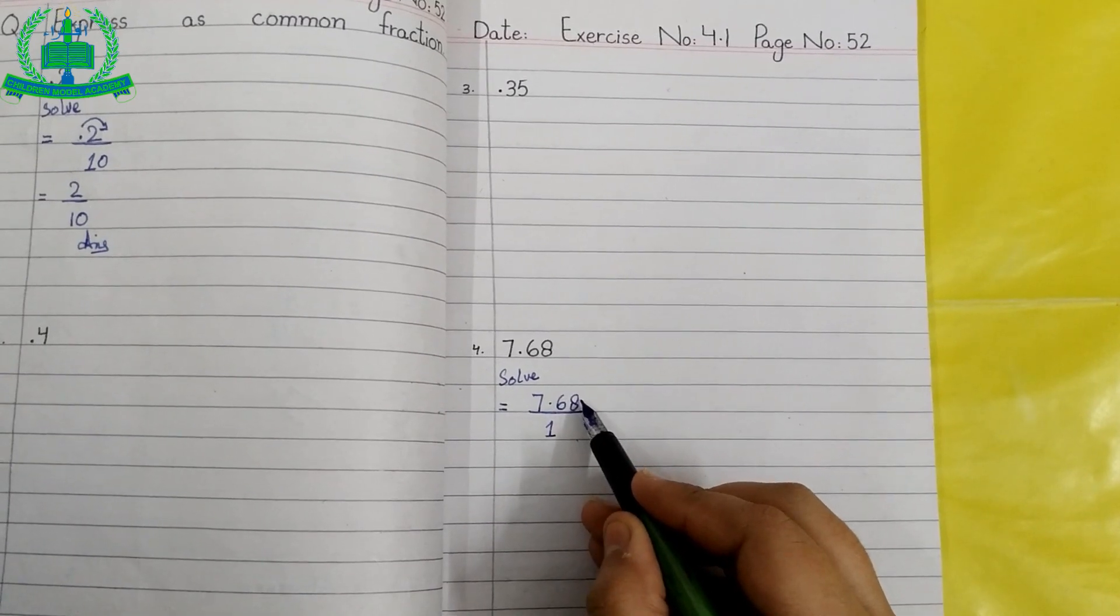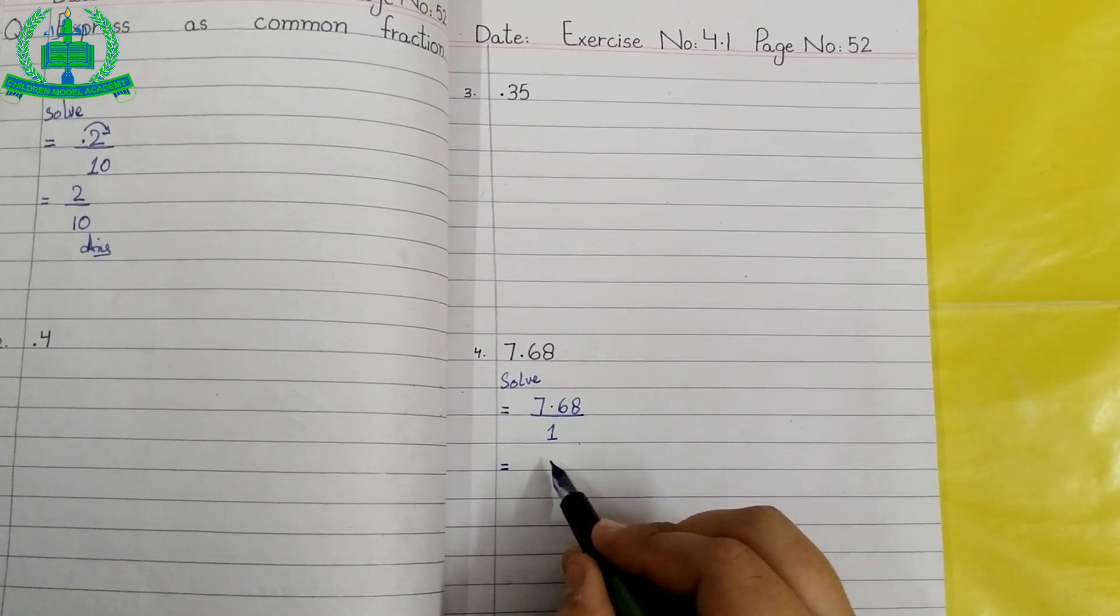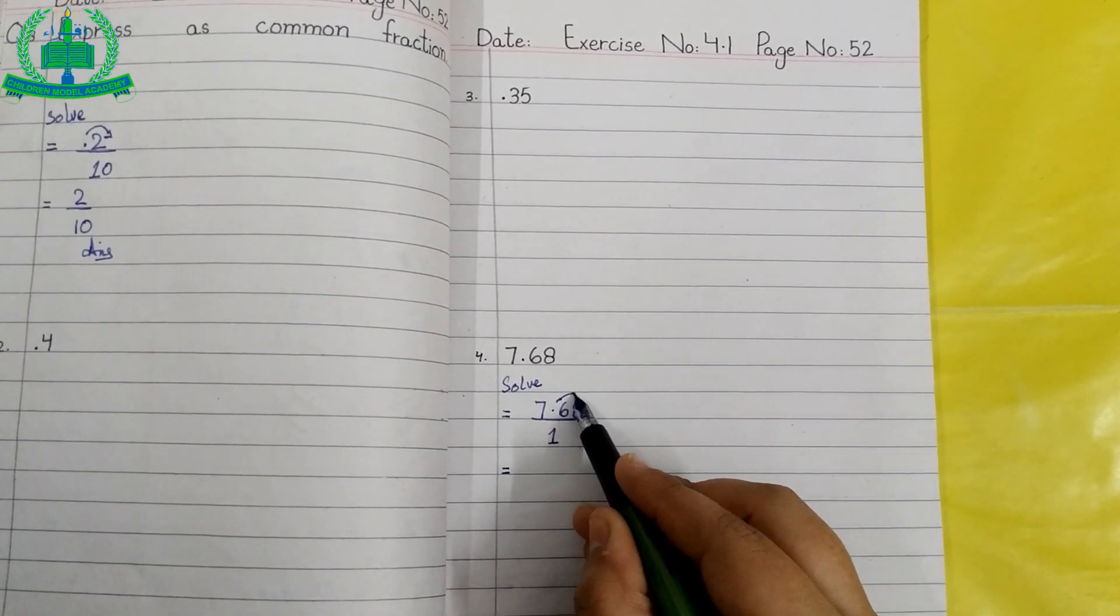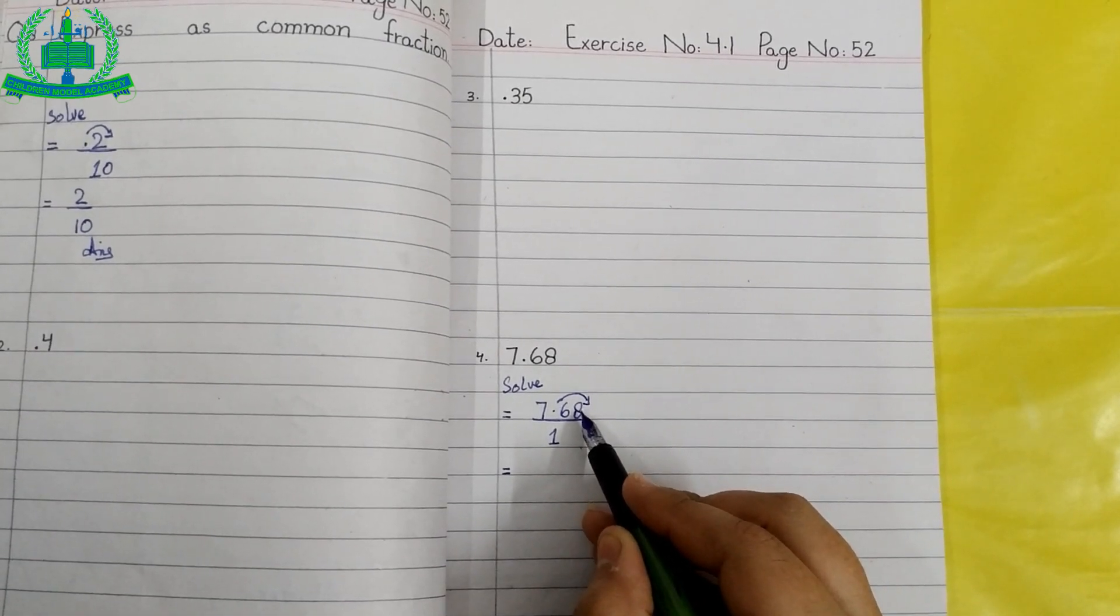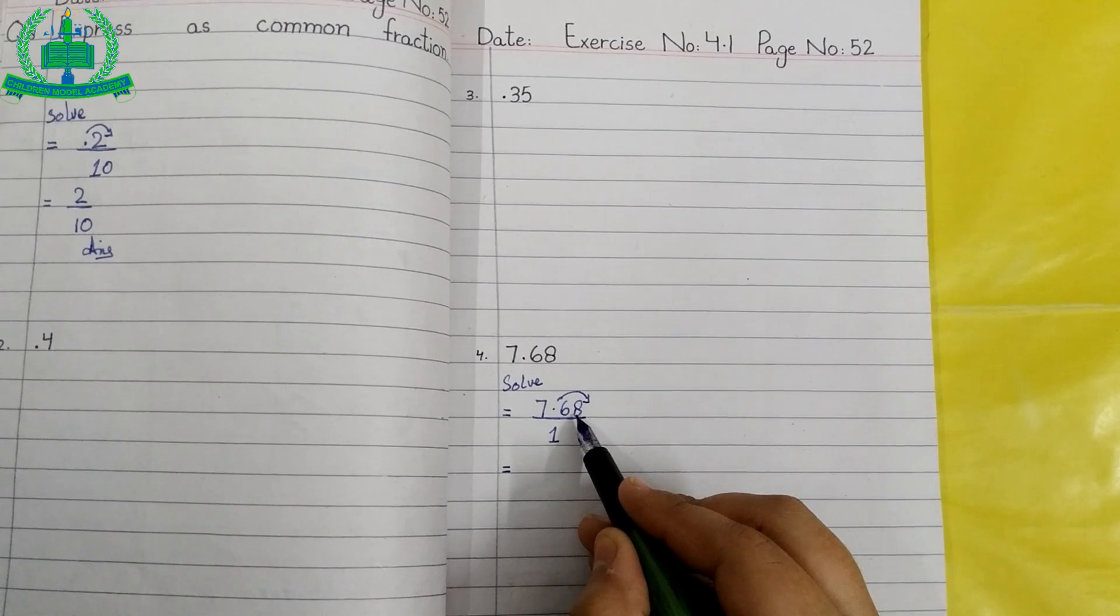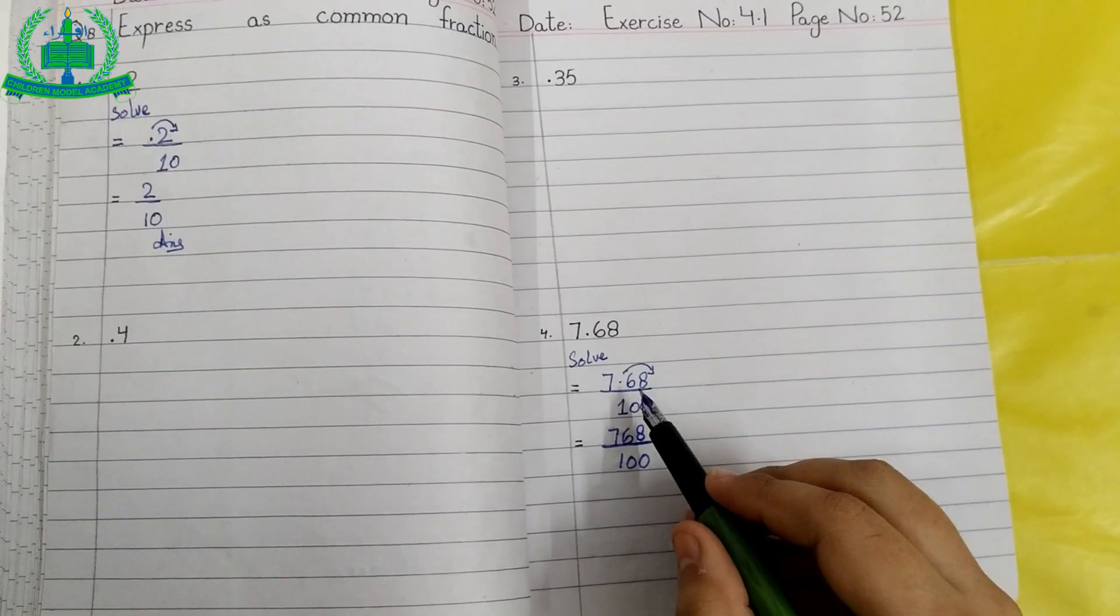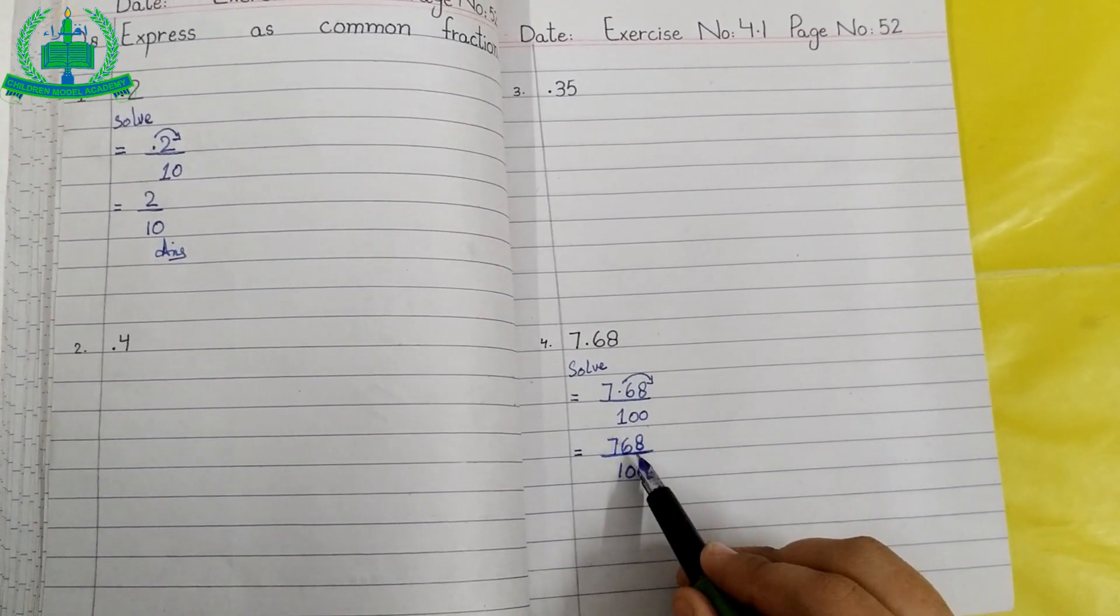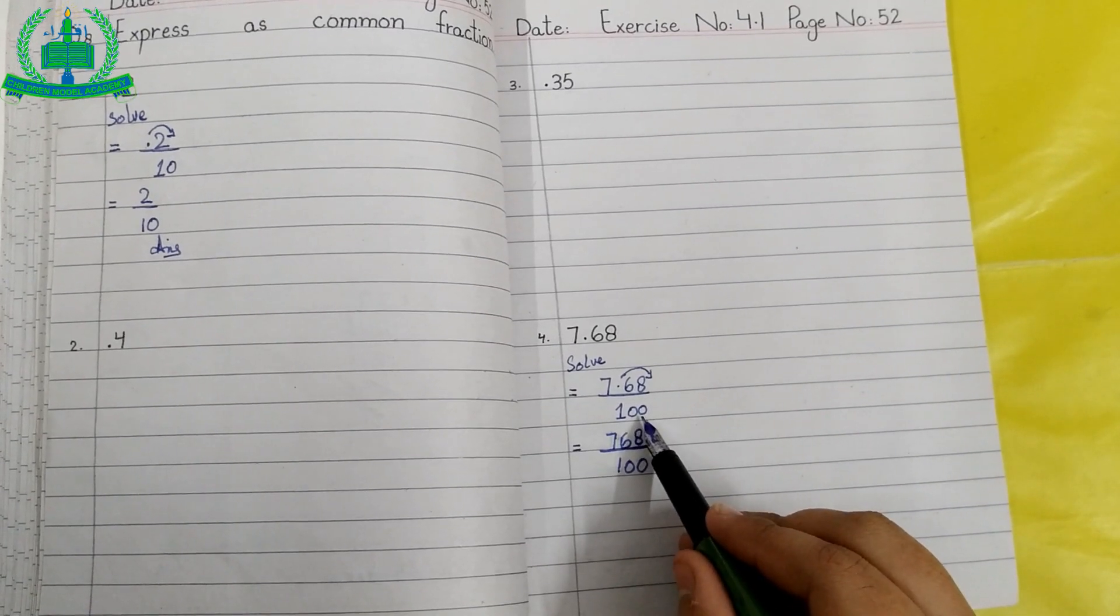Again equals sign, 1 as a denominator. When we move the point on right hand side after 2 digits, we add 2 zeros with the denominator.